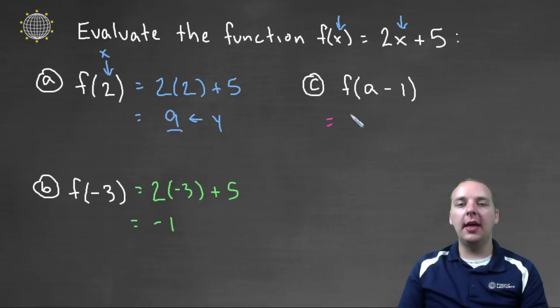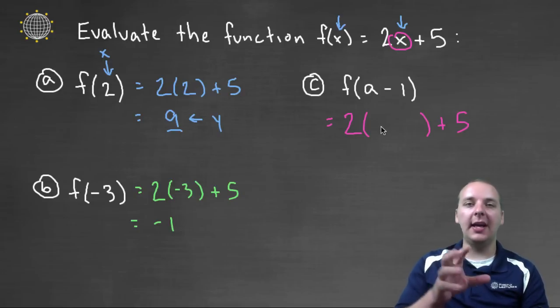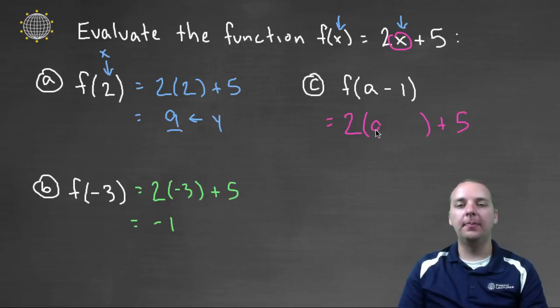All we're going to do is we'll take f of x, and everywhere that there used to be an x, like here, we're going to take it out, so we'll have two times blank plus five. Usually I'll put a blank in wherever an x used to be. And I'll replace that expression, that x, with an a minus one. So instead of two x plus five, it'll be two a minus one plus five.